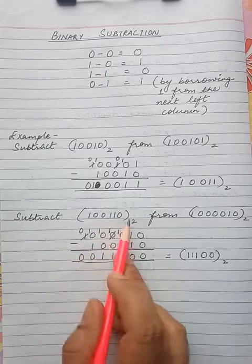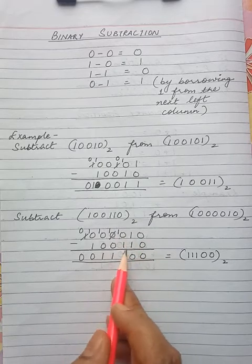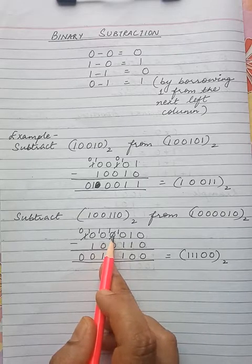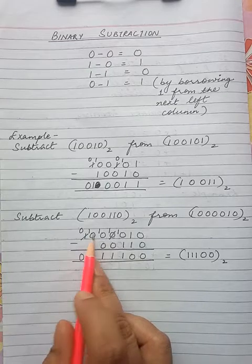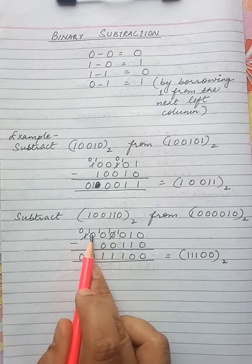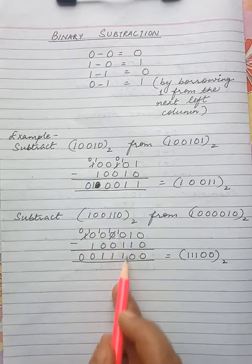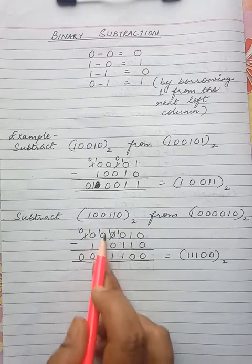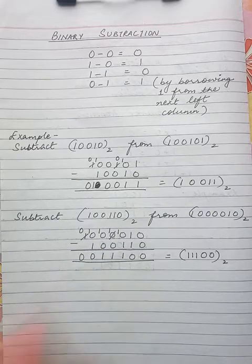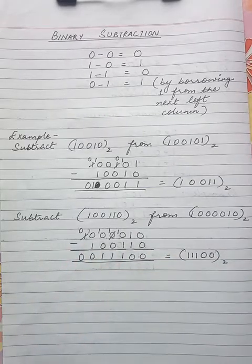Take another example — subtract this number from this number. 0 minus 0 is 0, 1 minus 1 is 0, 0 minus 1 — not possible. So 1 has to be borrowed, but it cannot be borrowed because it is again 0. It cannot be borrowed from the next column either. So it has to be borrowed from further left, making that digit 0. 1 is borrowed first here, it becomes 10, then it is borrowed along the chain. So 10 minus 1 is 1, 1 minus 0 is 1, 1 minus 0 is 1, 10 minus 1 is 0. So the answer is 11100 base 2. This is how subtraction is done.